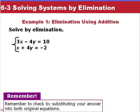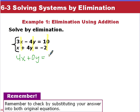Let's do this one by elimination. Our first step was to line up our variables — we have our x's, our y's, and our constants lined up. Looking at this, we have to either add or subtract our equations. If we add these two equations together, we get 3x plus x gives us 4x. Negative 4y plus 4y gives us 0y. And 10 plus negative 2 is positive 8. Notice that our y variable went to 0. So we get 4x equals 8, divide by 4, x equals 2.